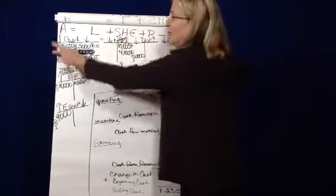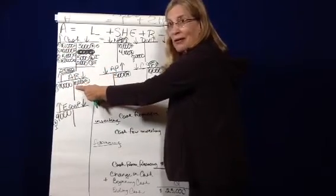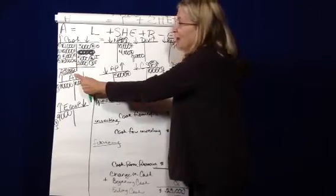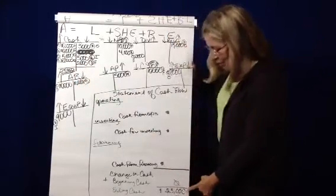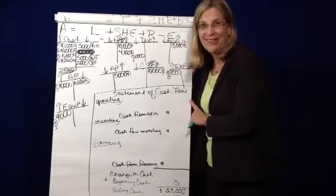In the next one, we'll take that $25,000, which is the ending cash balance, and we'll create a statement of cash flows. See you soon.